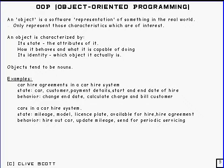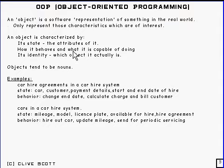Just a quick recap of what we've covered. An object is a software representation of something in the real world, and that's done using classes. The state of an object is represented using fields in the class, and how it behaves is done using methods.